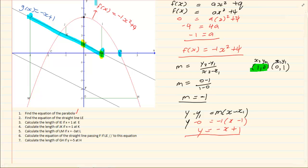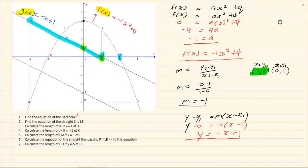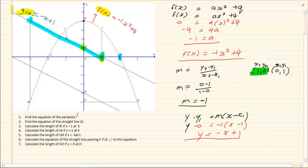Notice I am labeling the parabola f(x) and the straight line g(x). The reason we do this is when we have too many graphs on one diagram, we can't label them all 'y ='. This tells us: f(x) refers to the red parabola, g(x) refers to the straight line LE. That is how come we label them differently.